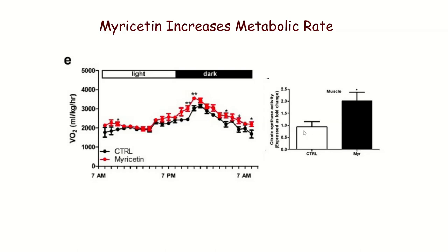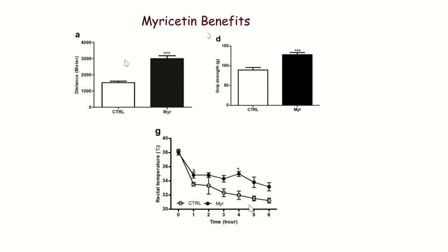Look at the difference in citrate synthase activity — again, the limiting factor in the Krebs cycle. These mice have significantly increased metabolic rate due to blocking PARP. They also have more endurance, stronger grip strength, and they're better at doing thermogenesis in response to a cold challenge. Pretty impressive benefits.